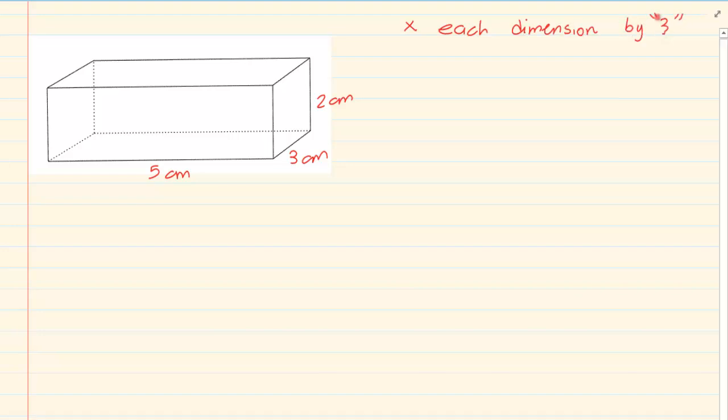What does that mean? That means that I am multiplying this side by 3, I am multiplying this side by 3 and I am multiplying this side by 3. So I am multiplying the length, the breadth and the width.